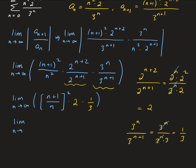Now we take the limit as n approaches infinity. For (n+1) squared over n squared, we have degree two on top and degree two on bottom, so we take the ratio of the leading coefficients, which gives us 1. So the overall limit is 1 times 2 times one third, which gives us two thirds.